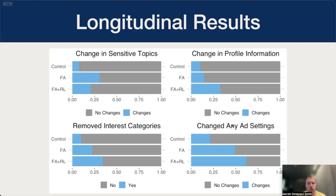And were more likely to remove interest categories. This is an important distinction. As mentioned earlier, advertisers have the ability to target ads to a population, but also selectively exclude ads from a population. Making changes to sensitive topics essentially opts users out of seeing ads related to these sensitive topics, but does not prevent the harms from being excluded from certain advertisements. Only changing the interest categories or demographic information can prevent these potential harms. Regardless, both video interventions were effective in motivating at least some behavioral change.